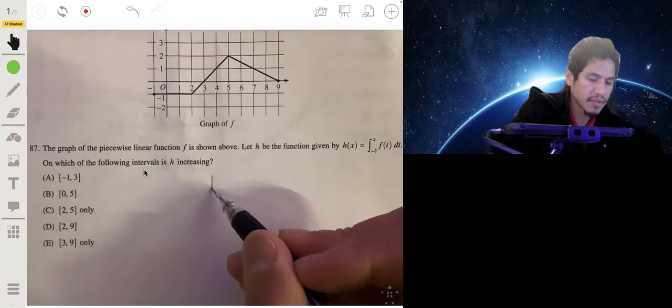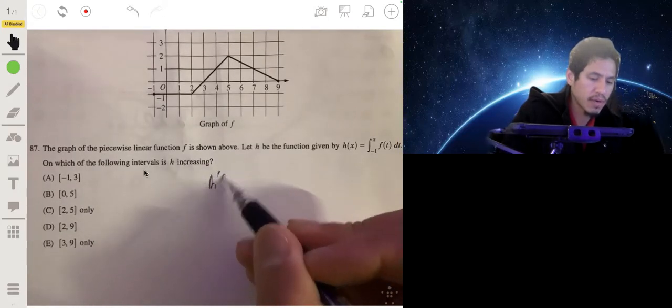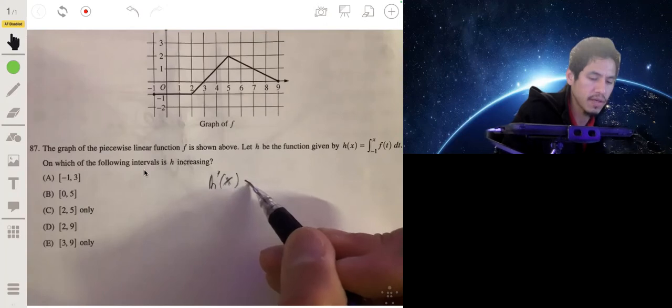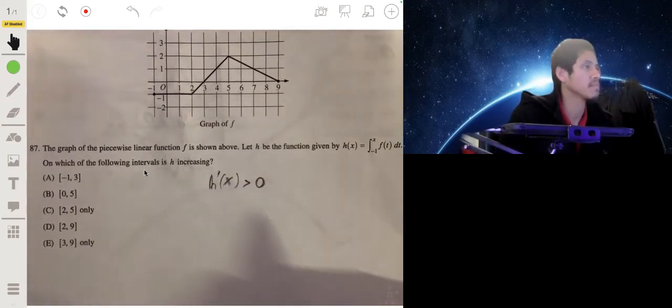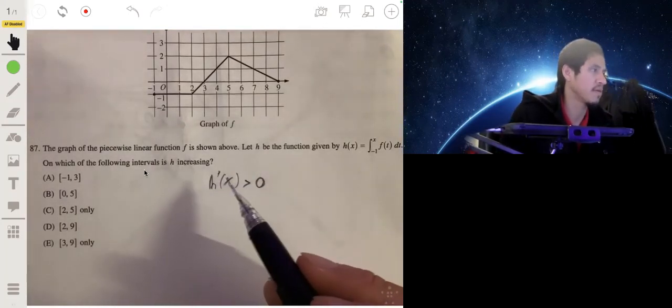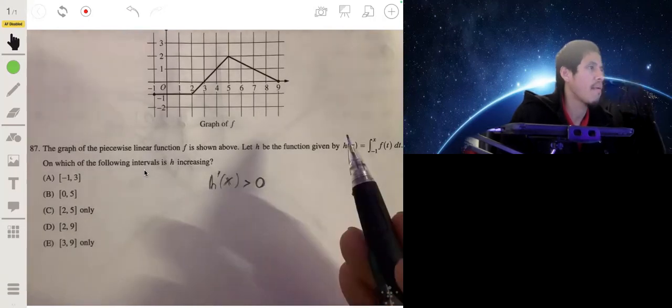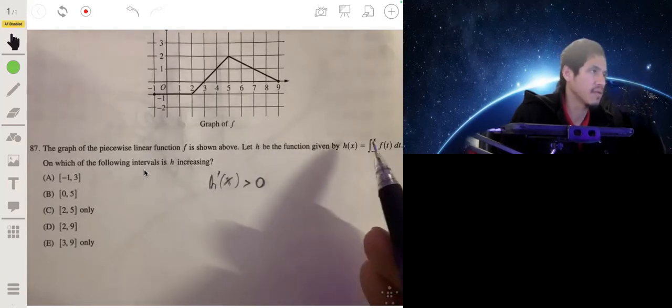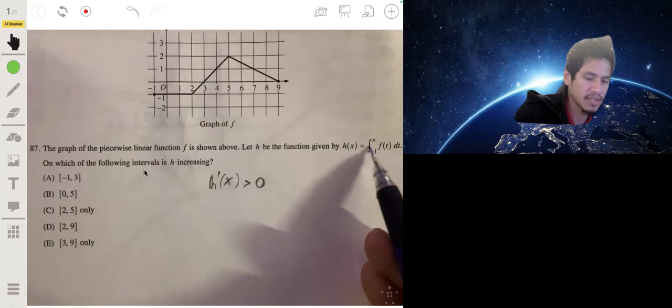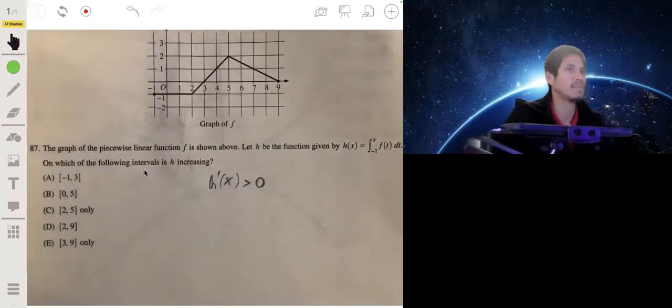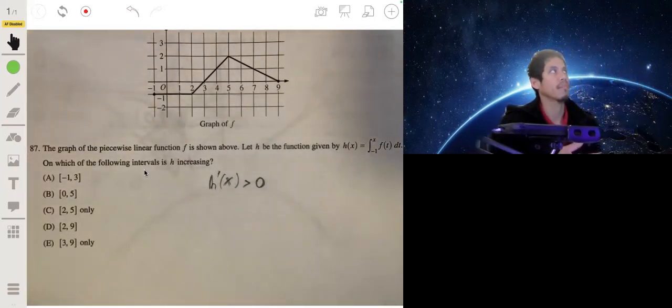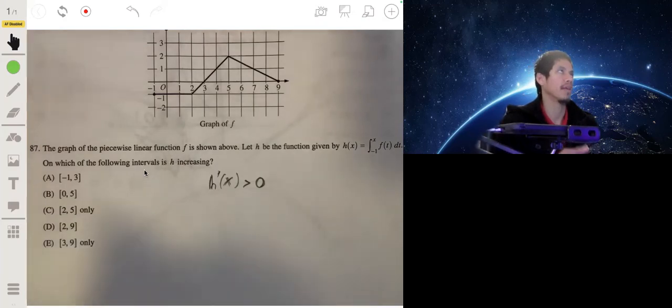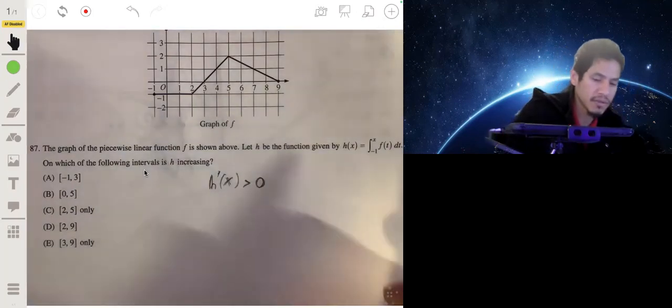Okay, so one way to do this is we just look at the derivative of h. h prime of x is positive when h is increasing. So take the derivative of this integral - you're basically just undoing the integration. That's essentially similar to undoing addition by subtraction, like inverse operations.